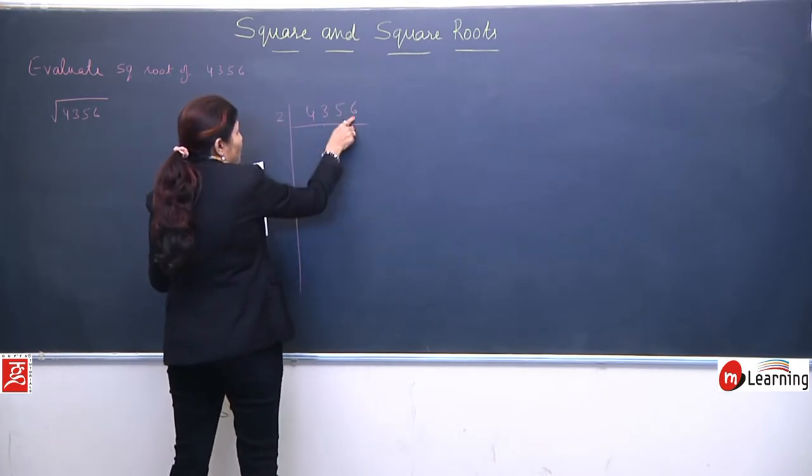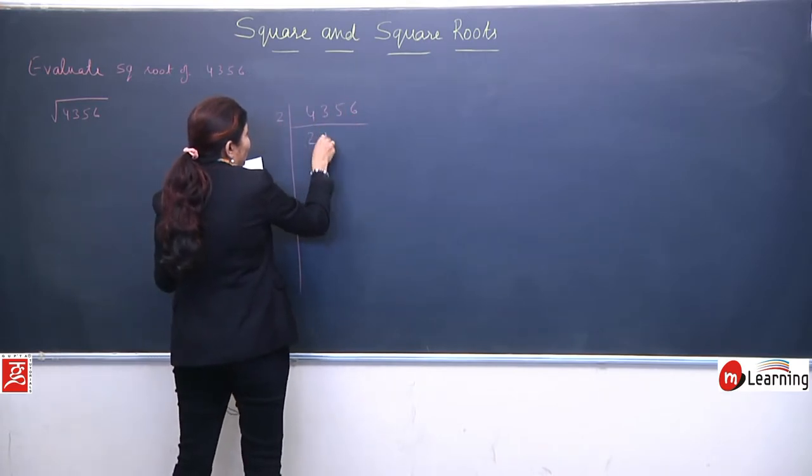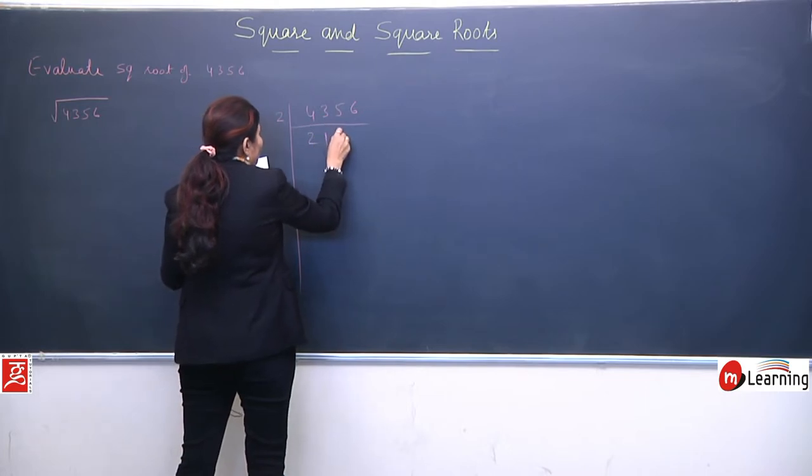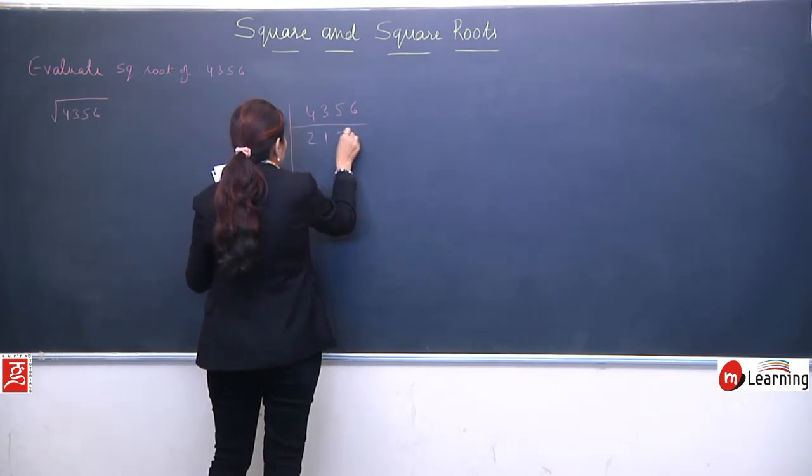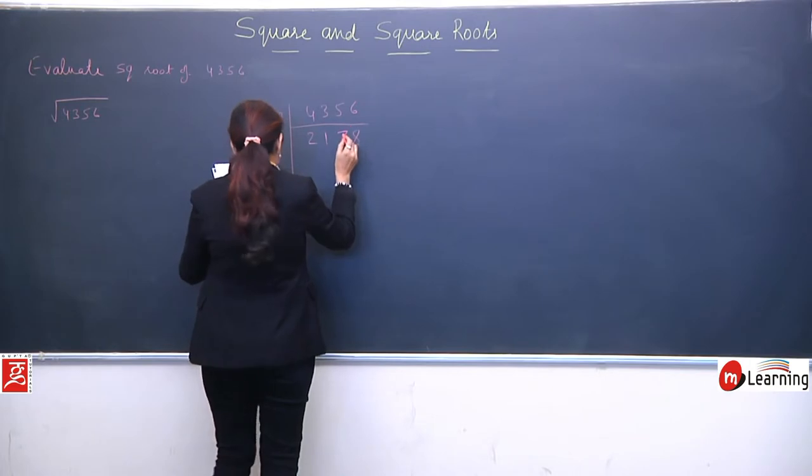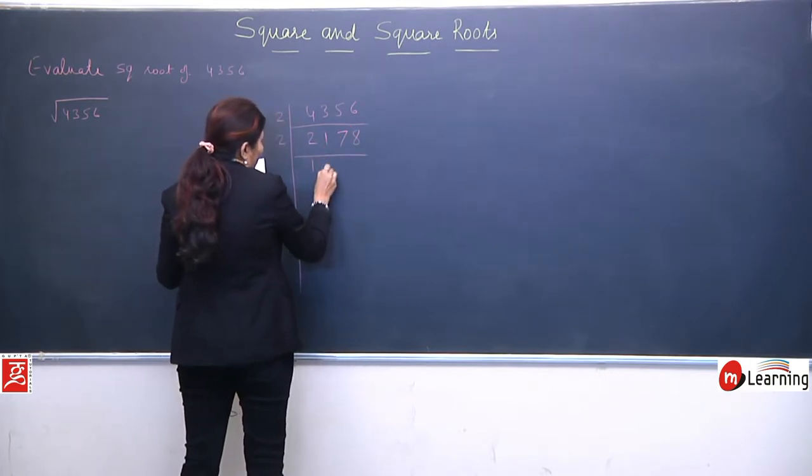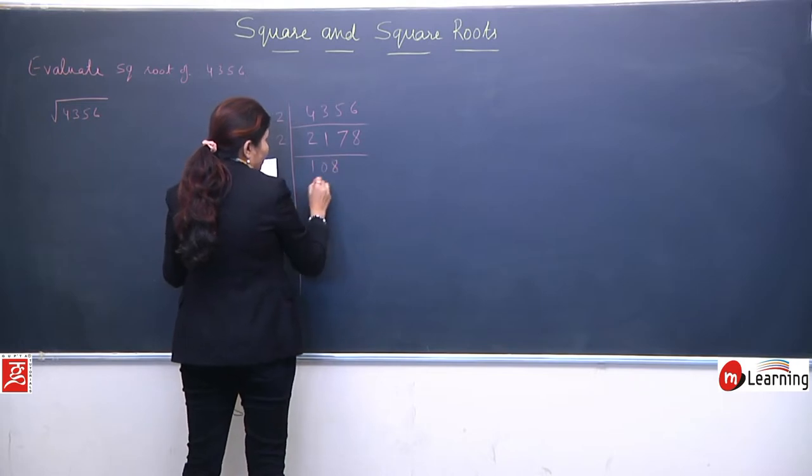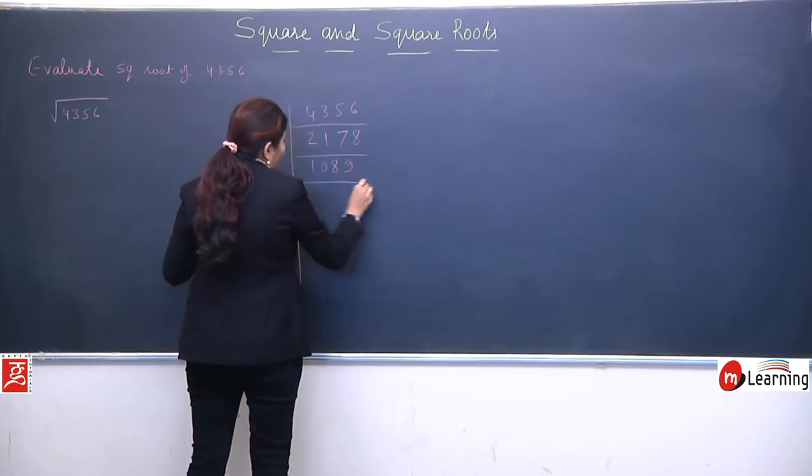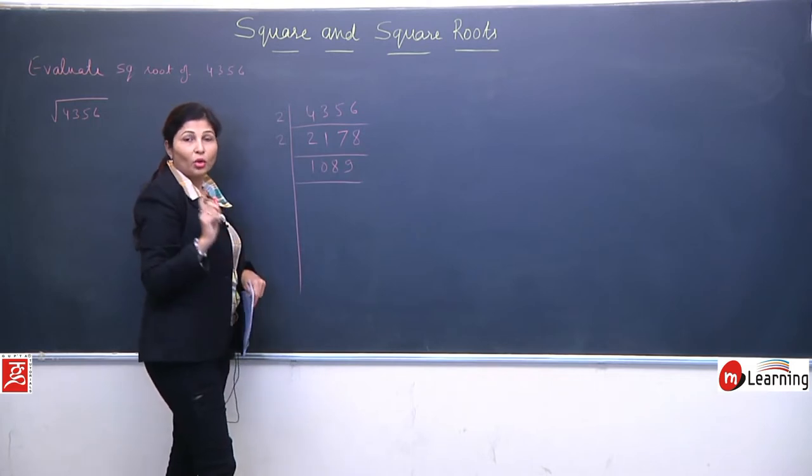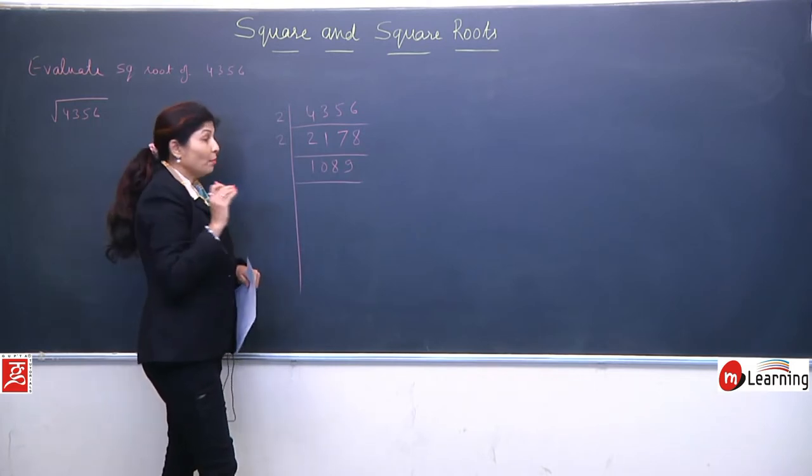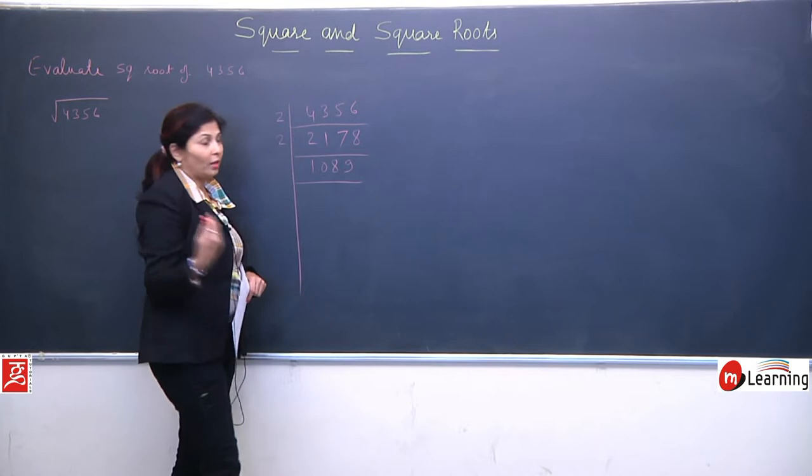Divide by 2 because it's an even number. 2 twos are 4, 2 ones are 2, 2 sevens are 14, 2 eights are 16, 2 ones are 18, 2 nines are 18. Students, I'm doing prime factorization directly without explaining each step because I'm assuming you already know this. If you don't know, you can solve it by division method.